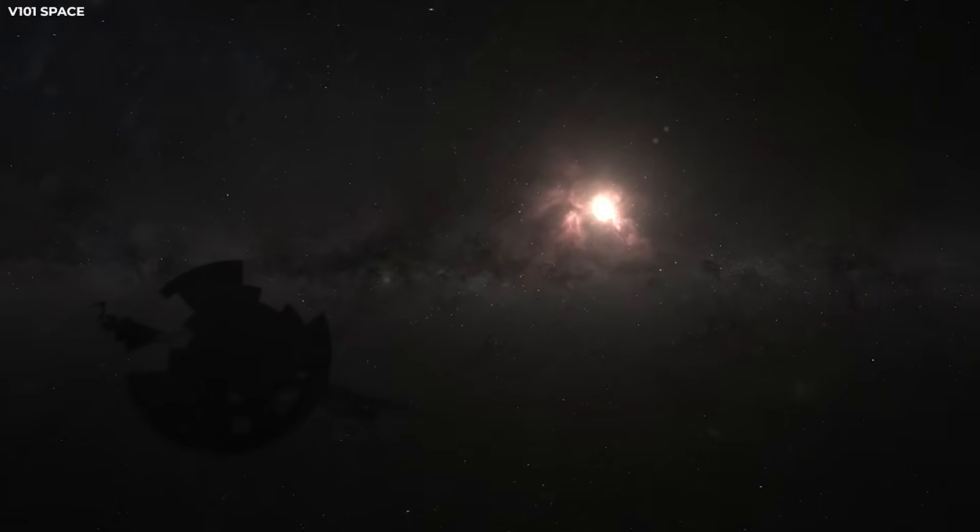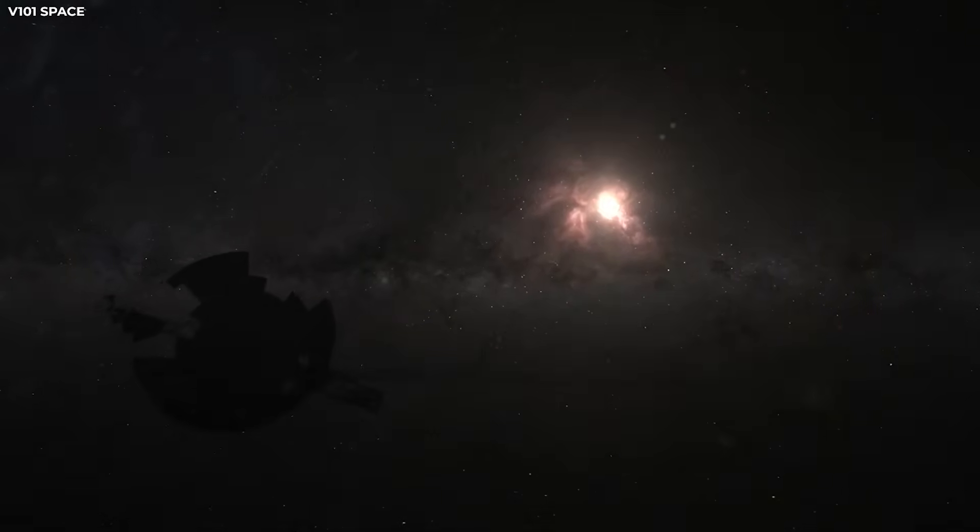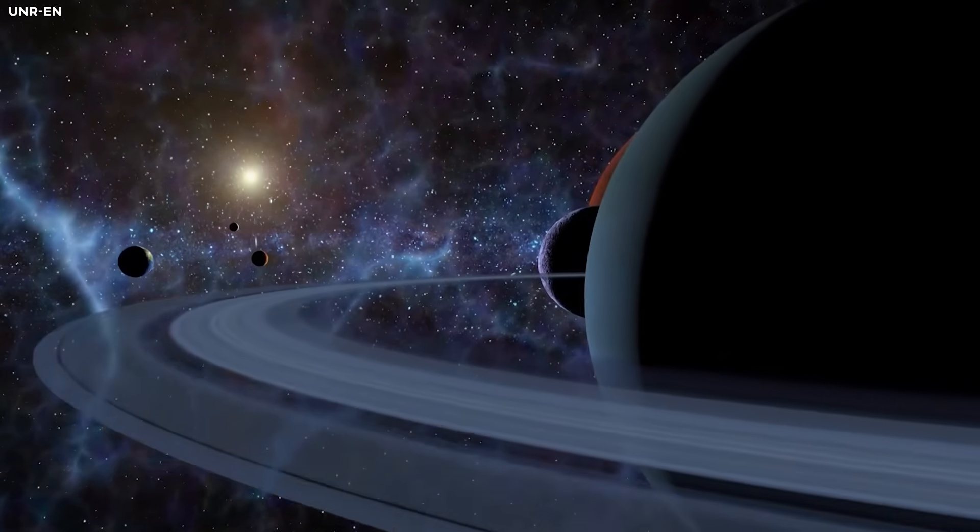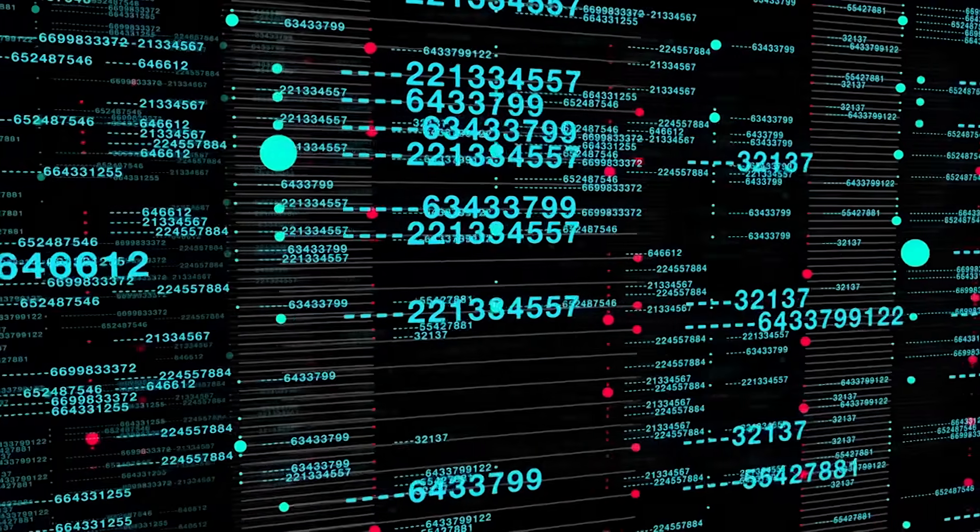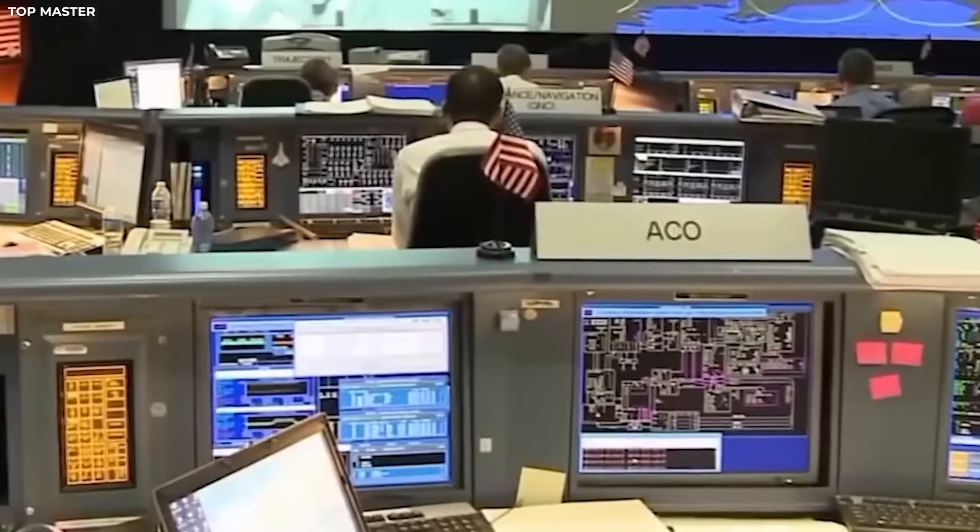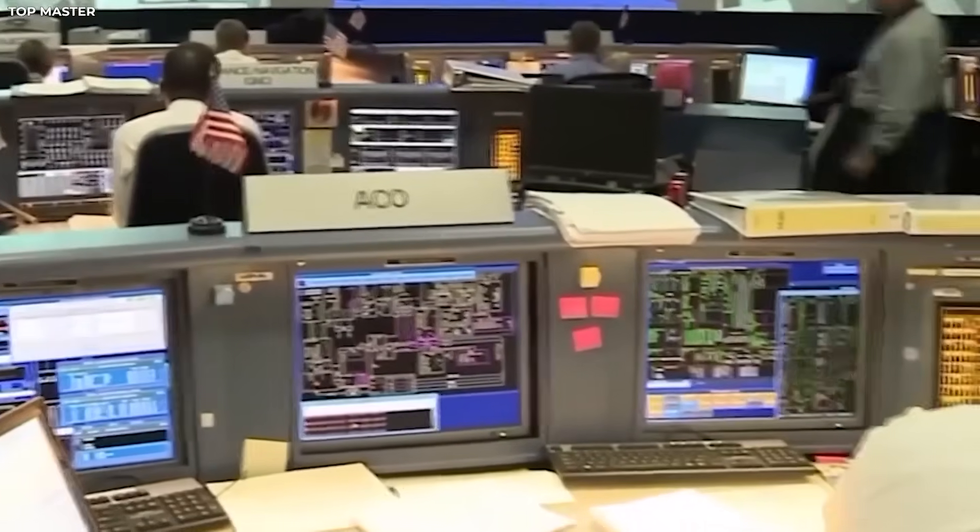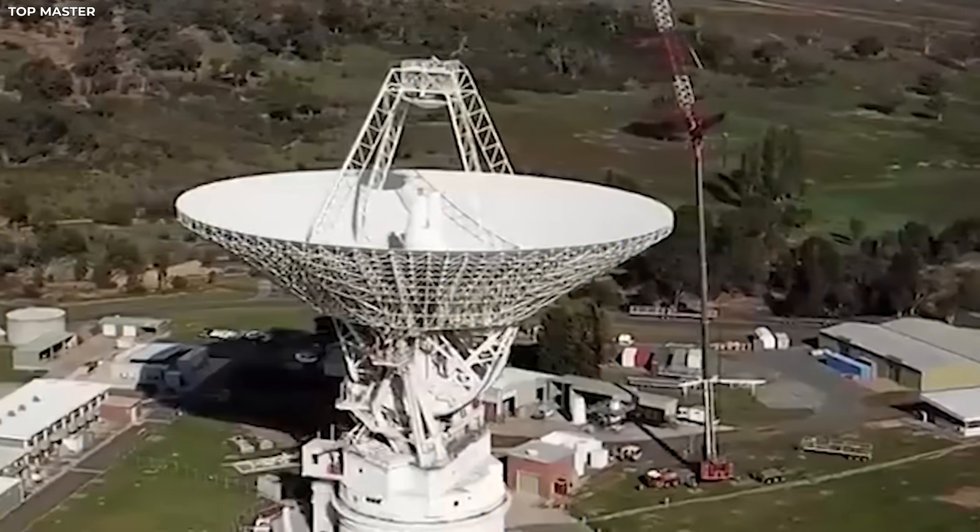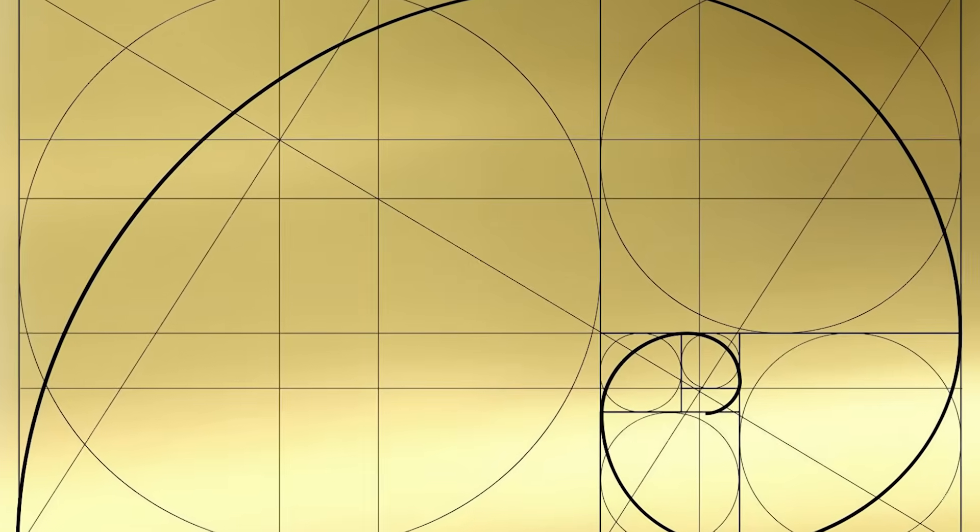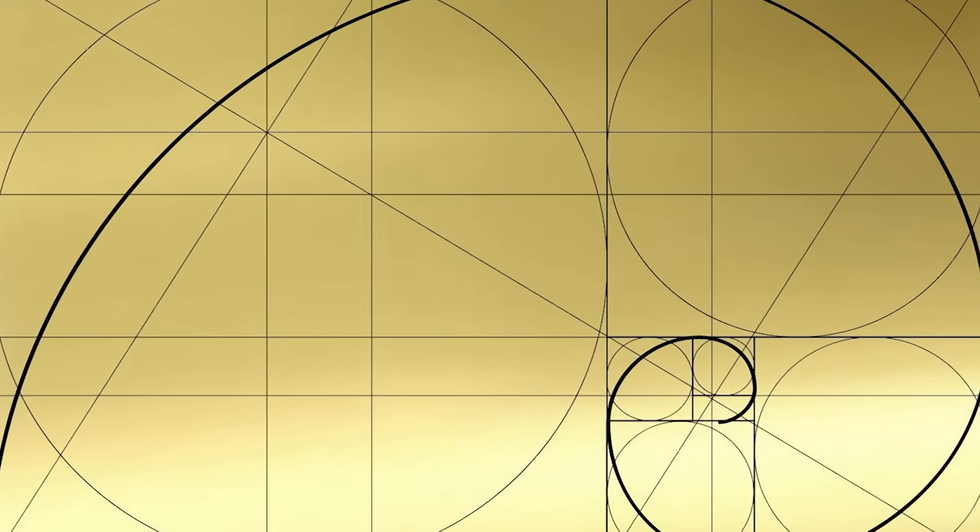Prime numbers are often used in attempts to communicate across space. They're a kind of universal math language. If anything out there wanted to say, we're smart, prime numbers would be a good way to show it. Even more mind-blowing is that the signal had symmetry.